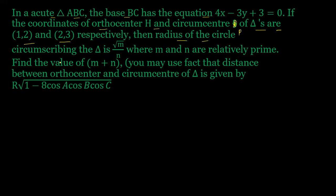Radius of the circle circumscribing the triangle is this. M and N are relatively prime, so we have to find M plus N. And we can do this, the distance between orthocenter and circumcenter of triangle is this.